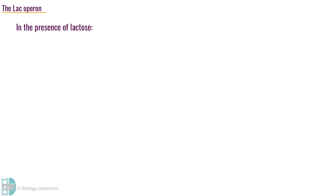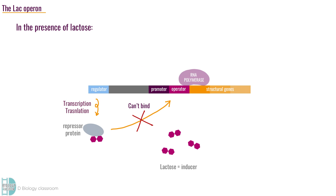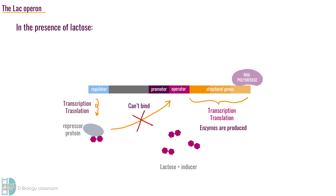When lactose is present, it acts as an inducer. It binds to the repressor protein, which changes the shape of the repressor protein so it cannot bind to the operator. RNA polymerase can now bind to the promoter and travel through. Transcription of the structural genes can now occur. Translation follows, and the enzymes are produced.